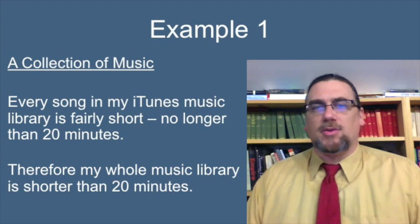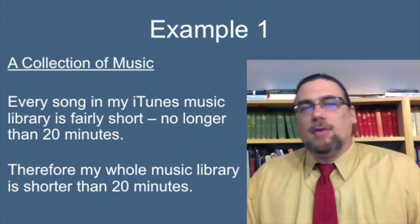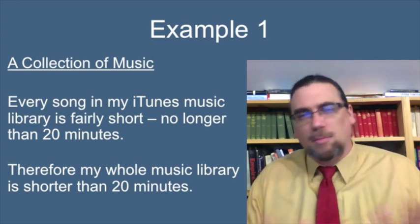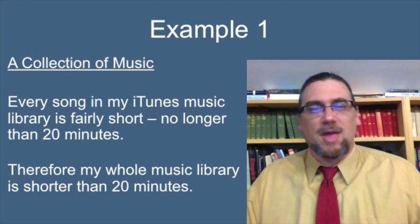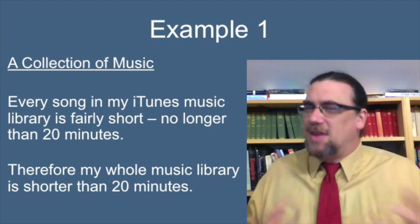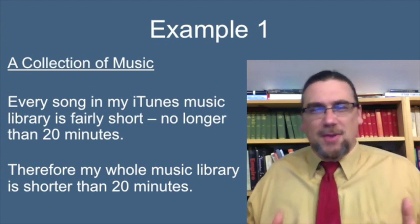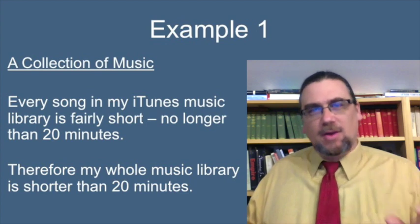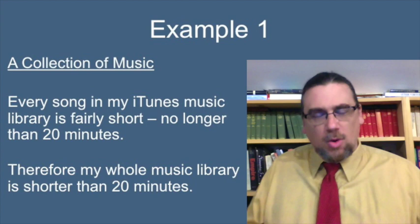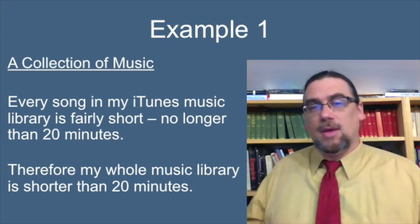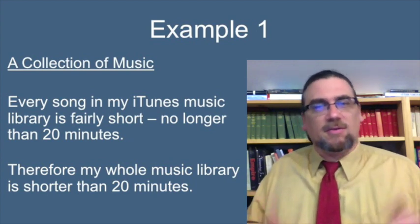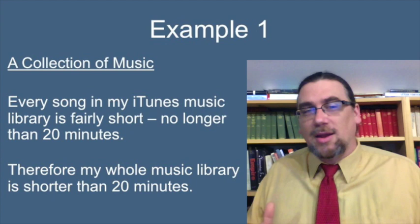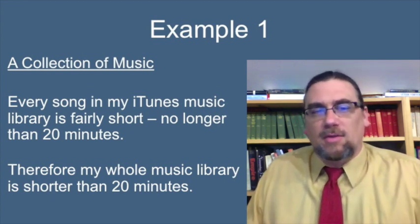Let's look at some examples. First, a music collection: every song in my iTunes library is fairly short — no longer than 20 minutes — therefore my whole music library is shorter than 20 minutes. It's easy to see something's wrong here. We're saying that because every individual unit has a certain length, the thing composed of them has that same length. But when we put together a collection and talk about quantity, we're adding quantities together — so clearly that inference doesn't work.